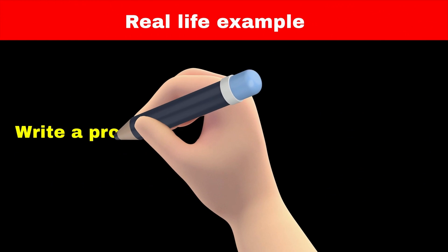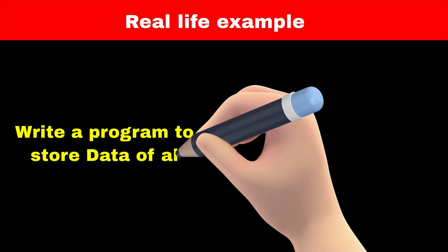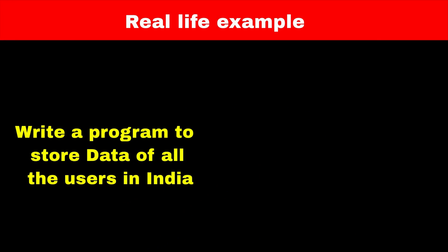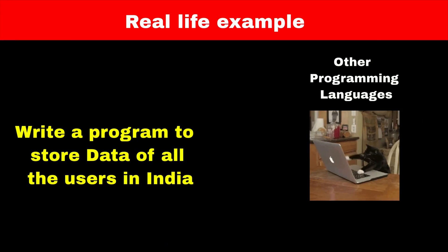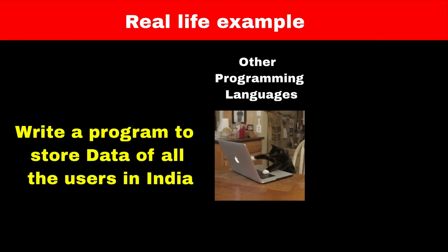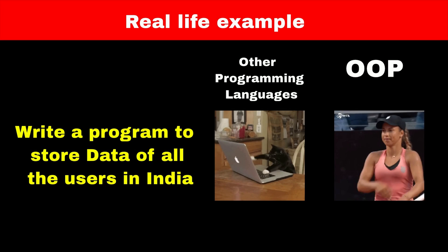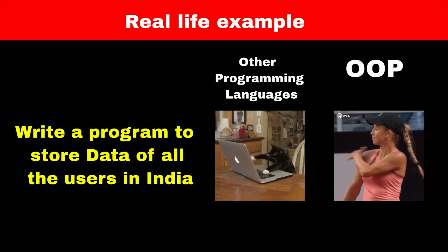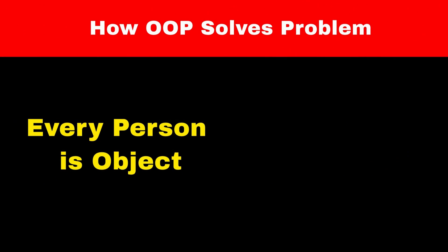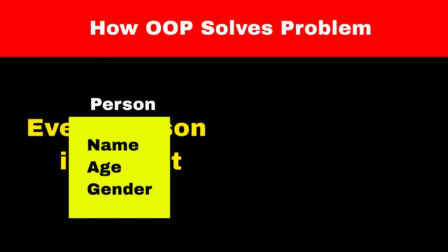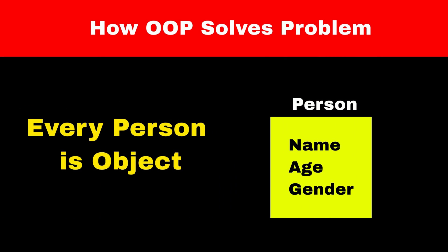Now let's take a real life example to understand this concept. Consider we want to build a program to store data of all the persons in India. This program seems to be complicated at first. But if you try to solve it with OOP concept then it is very easy. So OOP assumes that each person in the world is an object which has unique properties like name, age, and gender.